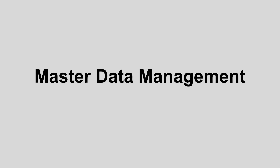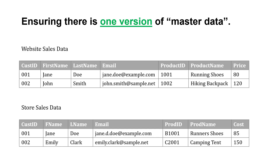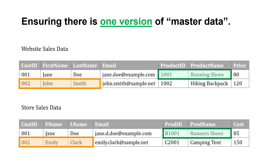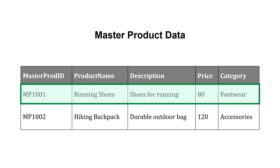We could also use master data management as one of our quality techniques. This is ensuring there's one version of what we call master data. Let's say we have data from our website sales and data from our physical stores. We could have inconsistencies in customer IDs — the same customer with a different customer ID, different product IDs for the same product, and potentially different prices. We want to make sure that for key master data, there's one version. So we could have master product data used for both our website and physical store sales, with a master product ID, product name, description, and a common price and category.